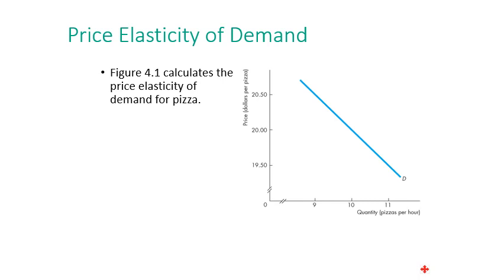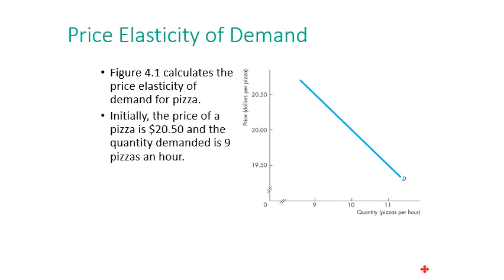Look at this example. We have a demand curve, and for simplicity we represent it as a straight line. In this demand curve we can see the negative relationship between quantity demanded of pizza per hour and the price of pizza — it is a negative, downward-sloping curve. How can we calculate the price elasticity of demand for pizza?